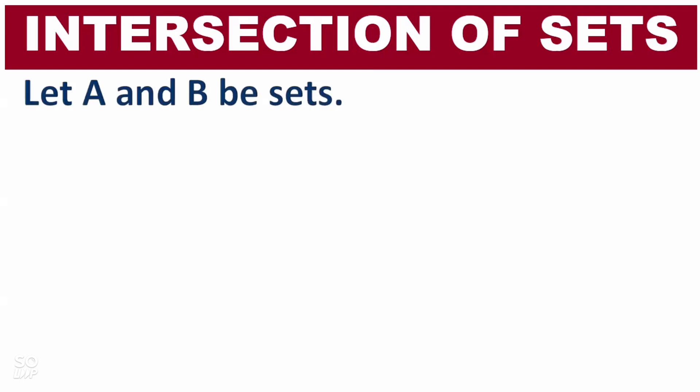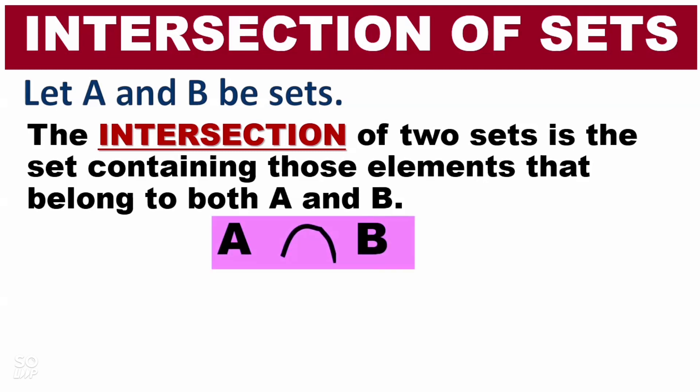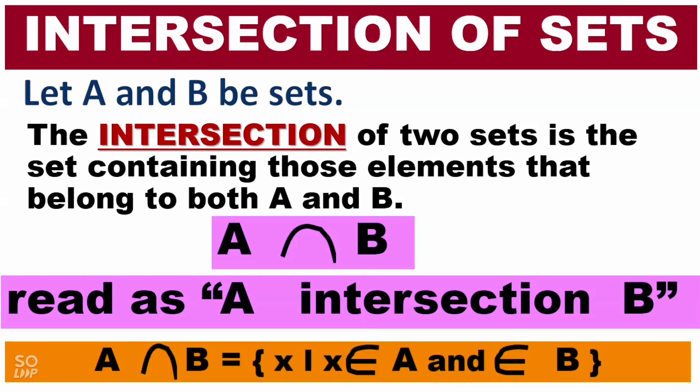Next, we have the intersection of sets. Let A and B be sets. The intersection of two sets is the set containing those elements that belong to both A and B. The symbol is A∩B, read as 'A intersection B.' In notation: A∩B = {x such that x is an element of A and an element of B}.